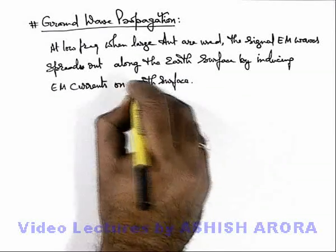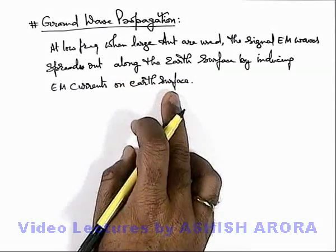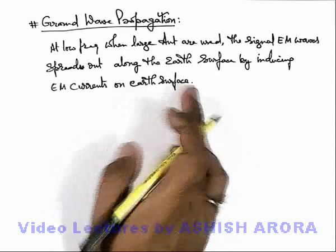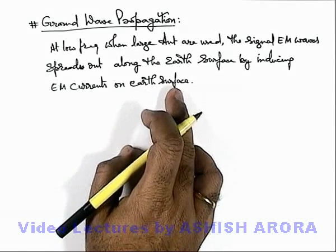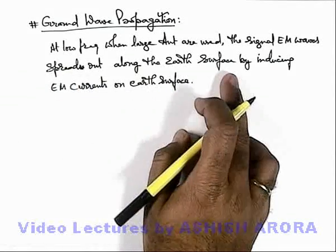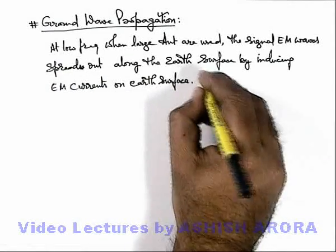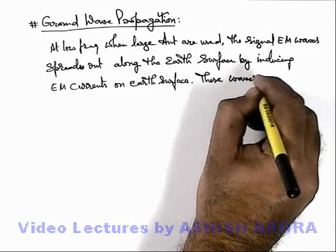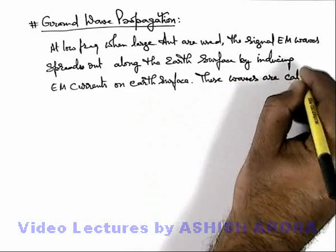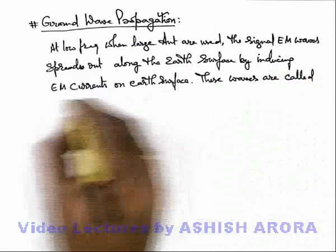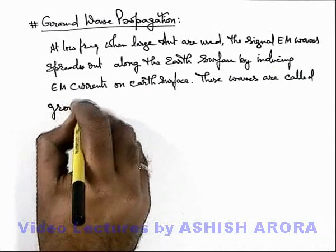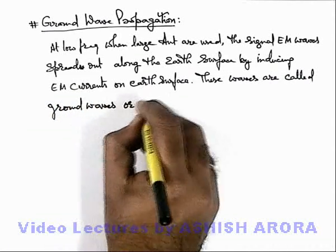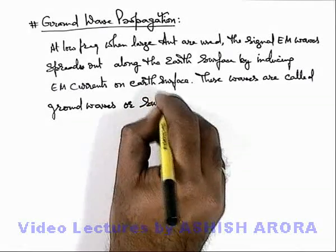The currents are only electric currents which are induced over the earth, and the magnetic field is due to the earth's current also, which will participate in the propagation. These waves are called ground waves or surface waves.